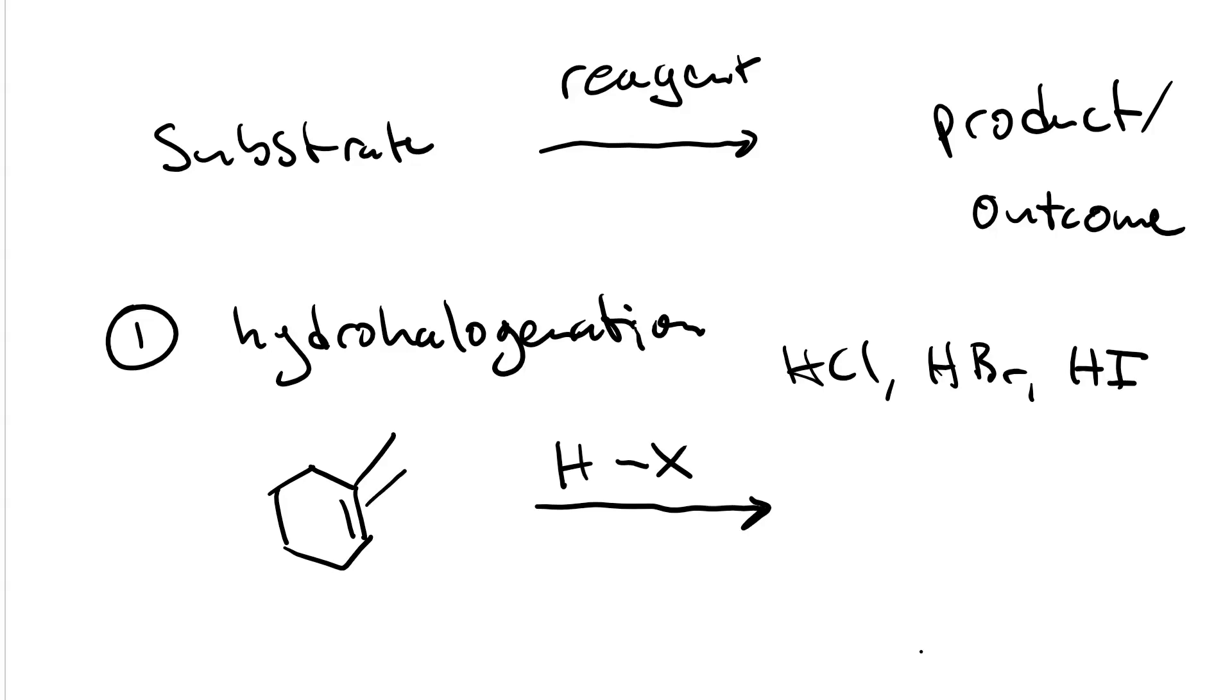The first step in the mechanism is proton transfer, with the pi bond acting as the base. This creates a carbocation, which is planar. Hence, the halide ion that is generated can attack from either the front or the back, and there is no stereospecificity.